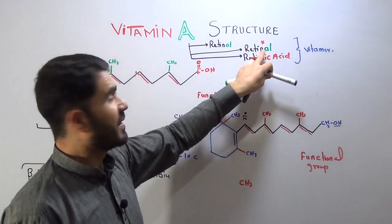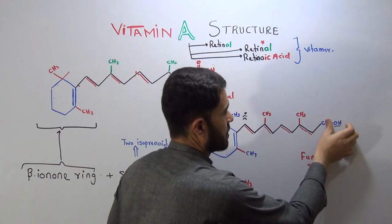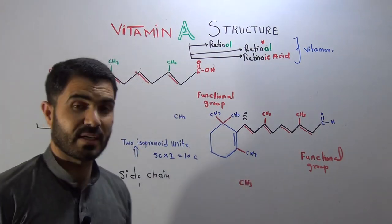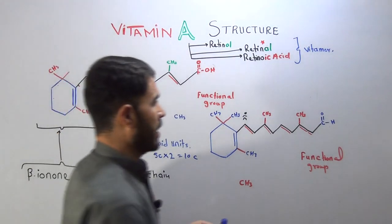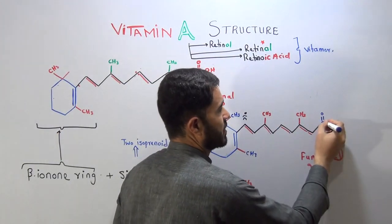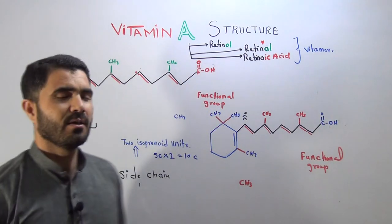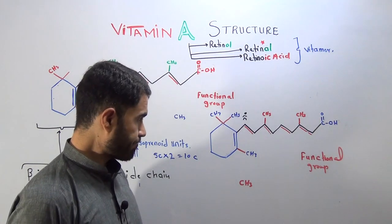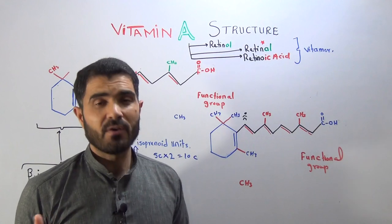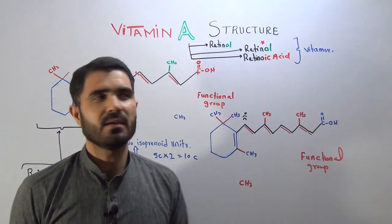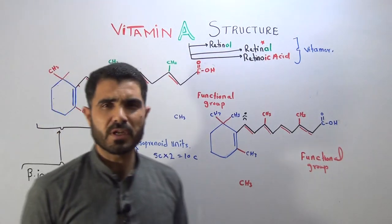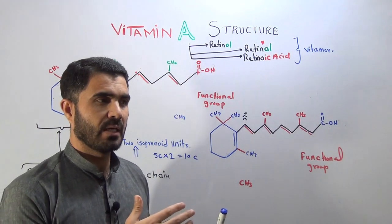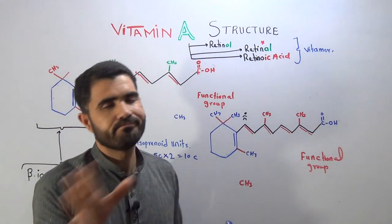If you want to write retinal, just write C double bond O and add H — that represents the aldehyde group. This whole structure then represents retinal, another form of vitamin A. For retinoic acid, just add OH to the carbonyl to make COOH. Writing the vitamin A structure becomes very easy this way. Since we are going to have a detailed lecture on vitamin A, I thought it is very important to give you some idea of the structure so it does not interfere while delivering the full lecture on vitamin A.